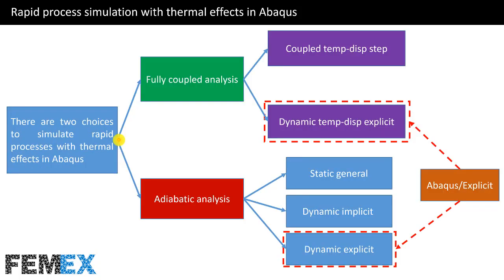Now I want to talk about rapid process simulation with thermal effects in Abacus. There are two choices to simulate rapid processes with thermal effects: a fully coupled analysis or an adiabatic analysis. For a fully coupled analysis, we can use coupled temp-disp step or dynamic temp-disp explicit. For an adiabatic analysis, we can use static general step, dynamic implicit step, or dynamic explicit step.